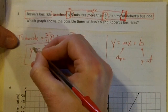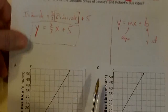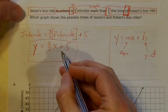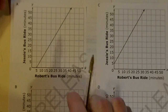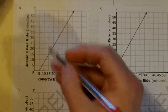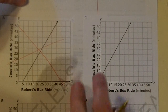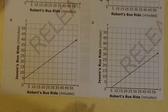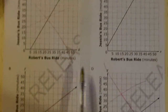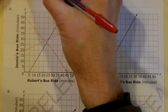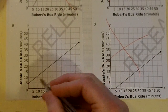Now I need to figure out which of my four answer choices matches this equation. The plus five is my y-intercept, so let me start by seeing if any answer choices have a y-intercept of five. Answer choice A does not have a y-intercept of five, so I can ignore it. Answer choice B does have a y-intercept of five. Answer choice C also has a y-intercept of five. Answer choice D does not, so I can ignore it. My correct answer must be either B or C.